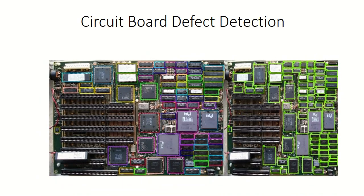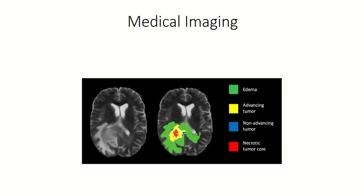Image segmentation is also used to identify defects in circuit boards. It's used mainly in medical imaging — for example, with cancers you can identify the cancer cell, but the stage of the cancer can be predicted from the shape of the cell. So you should know the shape of the cancer cells to identify which stage it is in. That is where segmentation plays a major role.